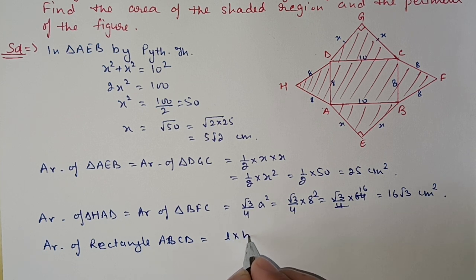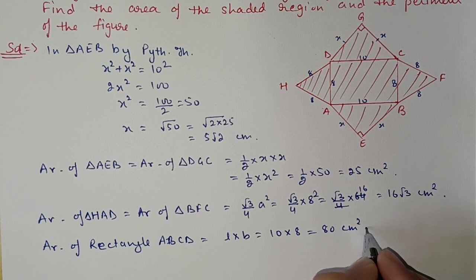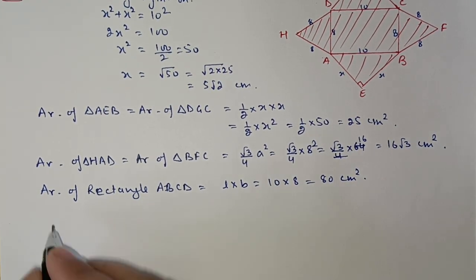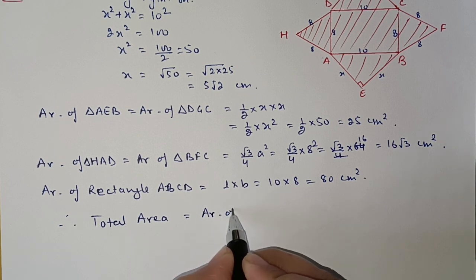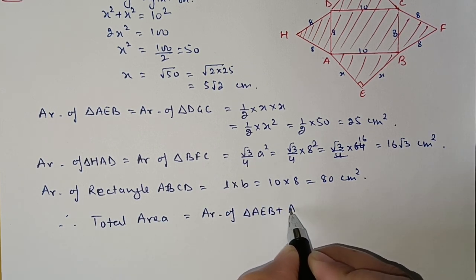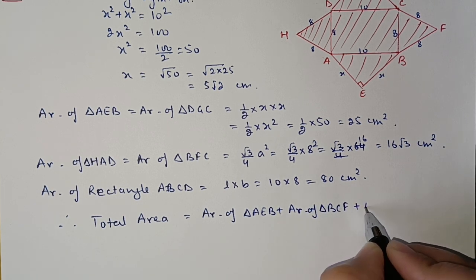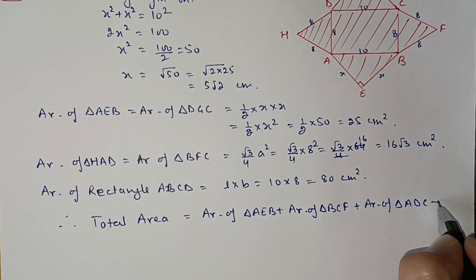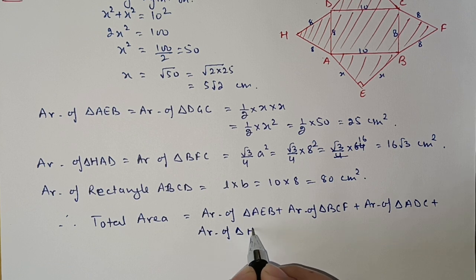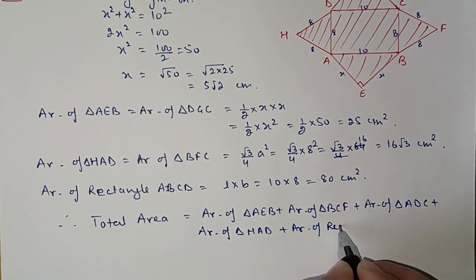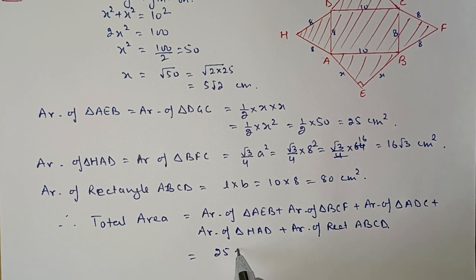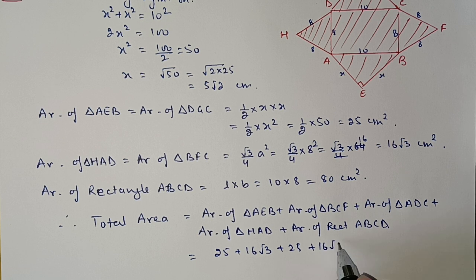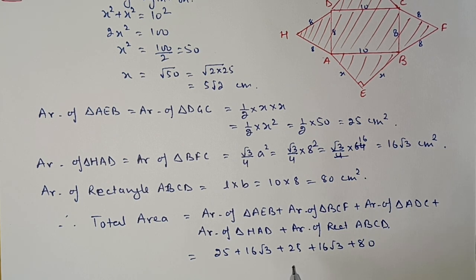Area of rectangle ABCD = length × breadth = 10 × 8 = 80 centimeter square. Total area = area of △AEB + area of △BFC + area of △DGC + area of △HAD + area of rectangle ABCD = 25 + 16√3 + 25 + 16√3 + 80 = 130 + 32√3 centimeter square.